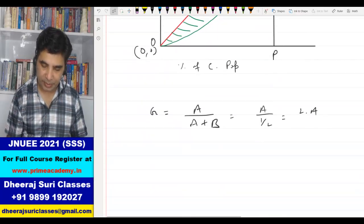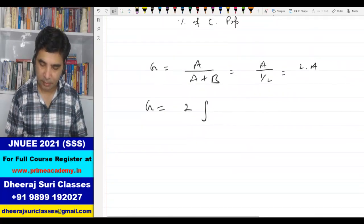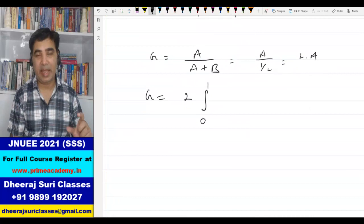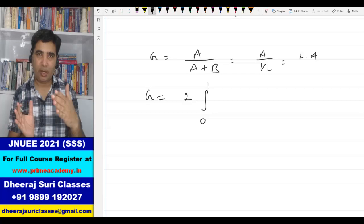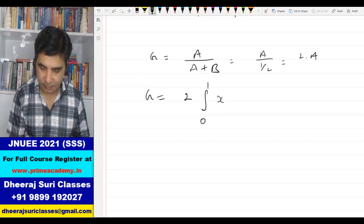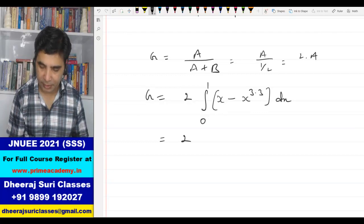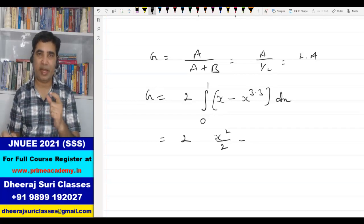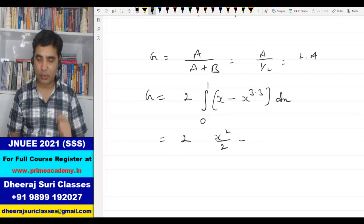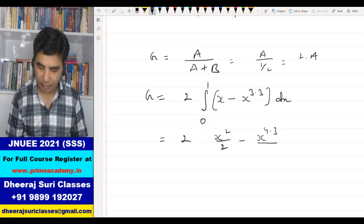So now the Gini coefficient is twice integration, because the limits are from 0 to 1. A is calculated as the area difference between the upper curve and the lower curve. So upper curve is X minus lower curve is X power 3.3 with respect to X. So it is twice of, now integration of X is X square by 2, integration of X power 3.3, X power N has integration X power N plus 1 divided by N plus 1, so X power 3.3 plus 1, 4.3, divided by 3.3 plus 1, that is 4.3.